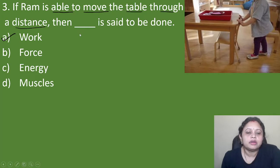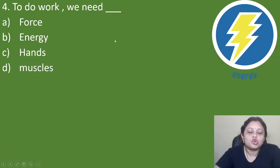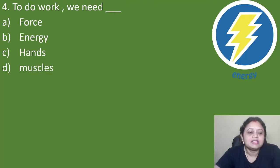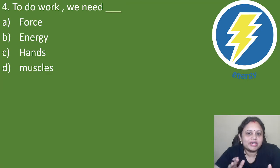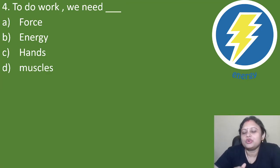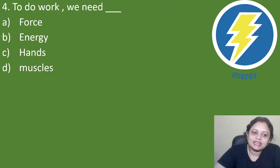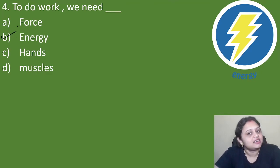Next question: to do work, we need dash. Option A: force, B: energy, C: hands, D: muscles. To do work, we need energy. If you have energy, you can do the work. If you have less energy, you cannot do the work properly. So the correct answer is option B, that is energy.